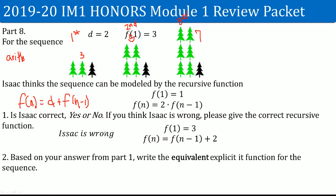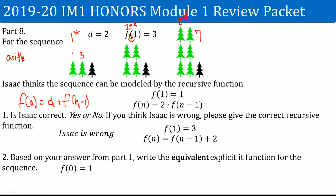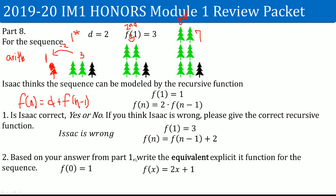Based on the recursive from part 1, write the explicit function. The zero term f(0) equals 1, found by going backwards and subtracting the common difference. So the explicit function is f(x) = 2x + 1, where 2 is the common difference (slope/rate of change) and 1 is the zero term (starting value).